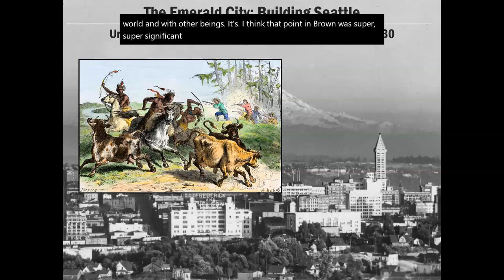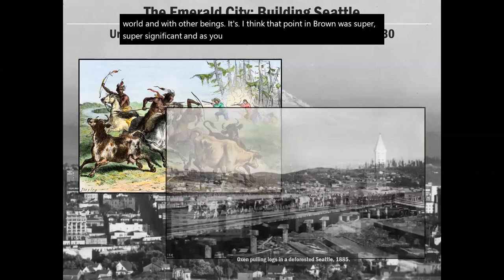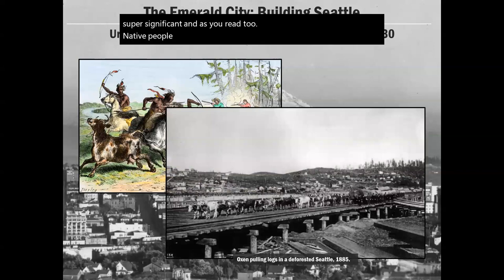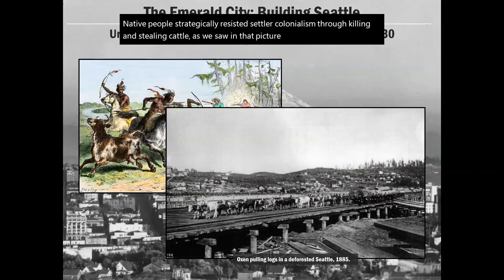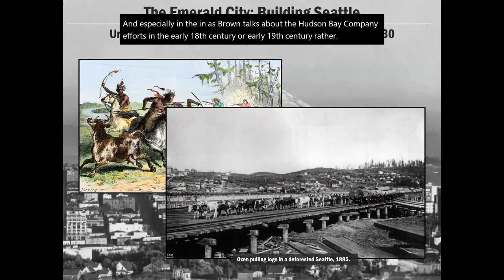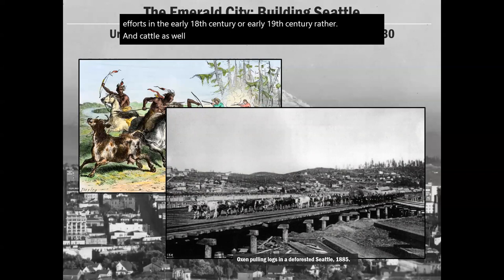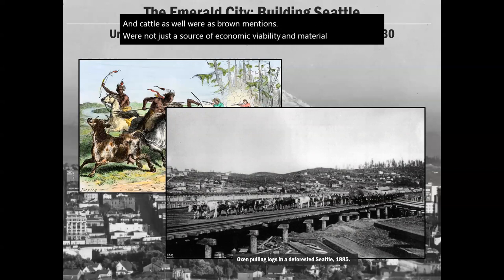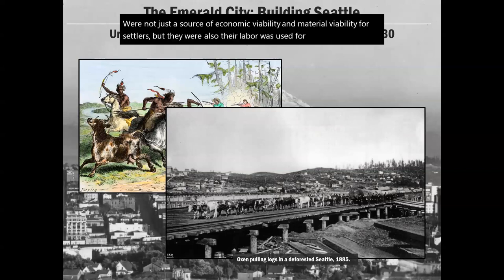As you read, Native people strategically resisted settler colonialism through killing and stealing cattle, as shown in the documentary, and especially in what Brown discusses about the Hudson Bay Company efforts in the early 19th century. Cattle, as Brown mentions, were not just a source of economic and material viability for settlers — their labor was also used for the development of the city.